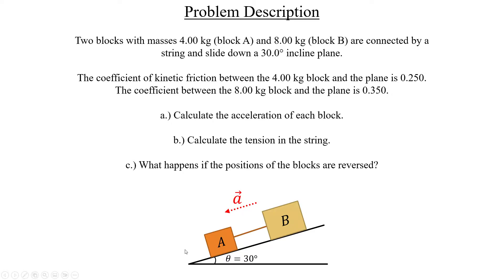The coefficient of kinetic friction between the 4 kg block, block A, and the plane is 0.250, and the coefficient between the 8 kg block, block B, and the plane is a bit larger, 0.350. We have three tasks here.